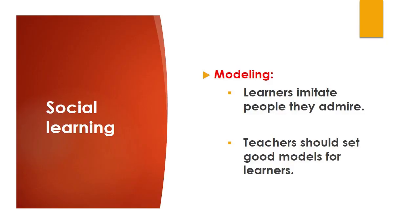The third type of learning is called social conditioning or social learning. This one is very simple and it is based on the idea that learners will imitate people they admire. In this regard, second language teachers should set a good example for their students. Students will imitate the teachers that they like and they will learn easily. If they don't like the teachers, they will find it difficult to learn.